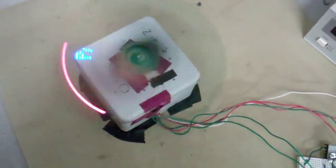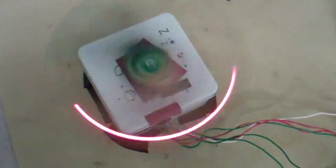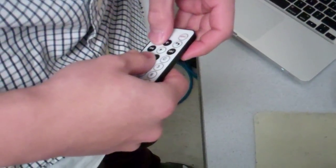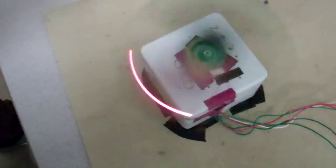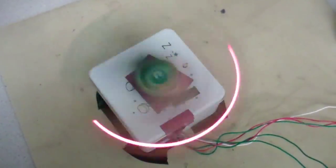So this is a persistence of vision display. It's got an infrared remote control in your hand. It's got an infrared receiver on here. We'll look at it in a minute.